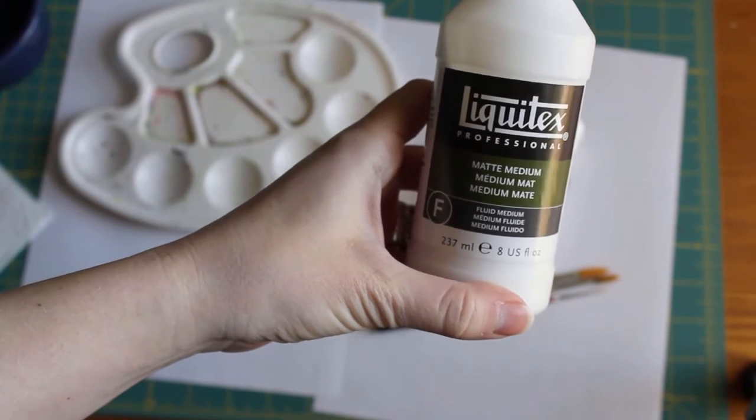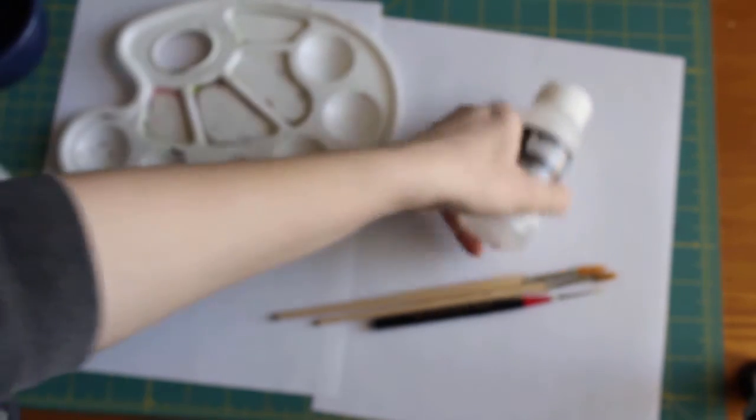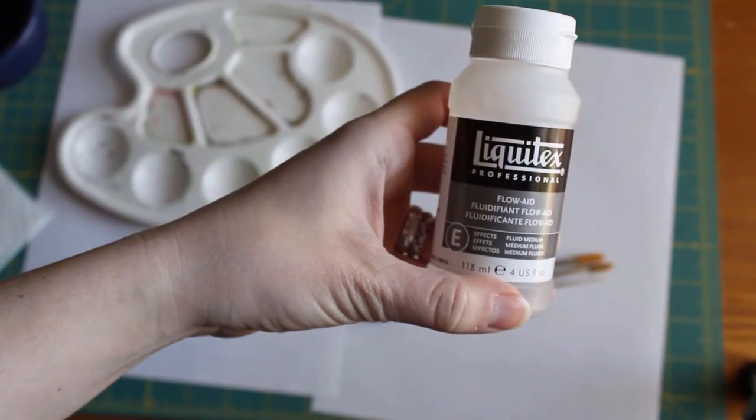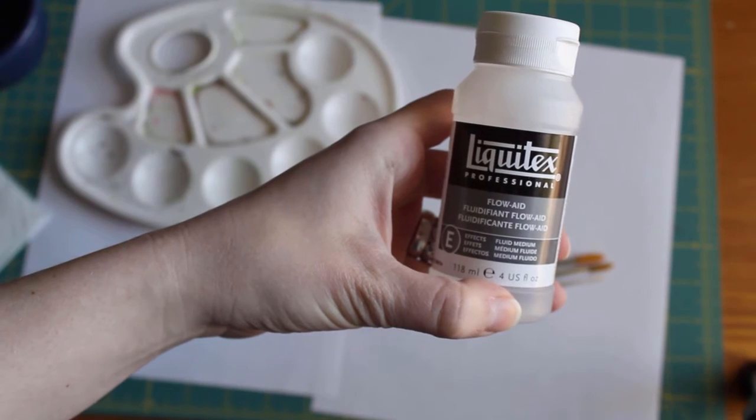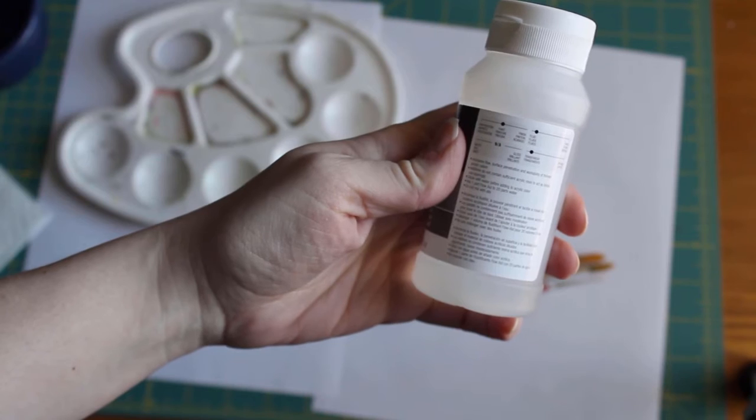One is Liquitex Matte Medium, which is also used as a sealant. One is Liquitex Flow-Aid. Flow-Aid shouldn't be used straight. The instructions say to mix it with water in a 20 to 1 ratio. For this video I've already mixed mine.